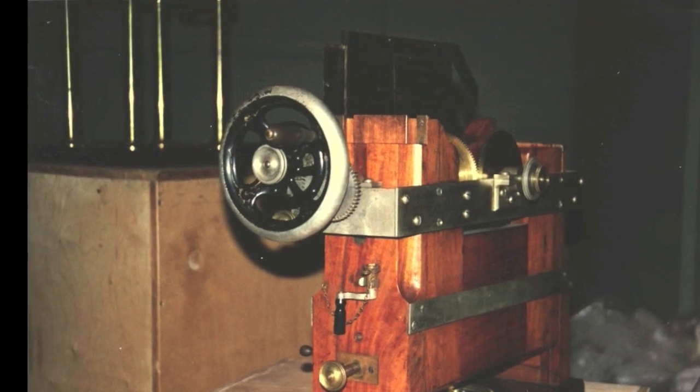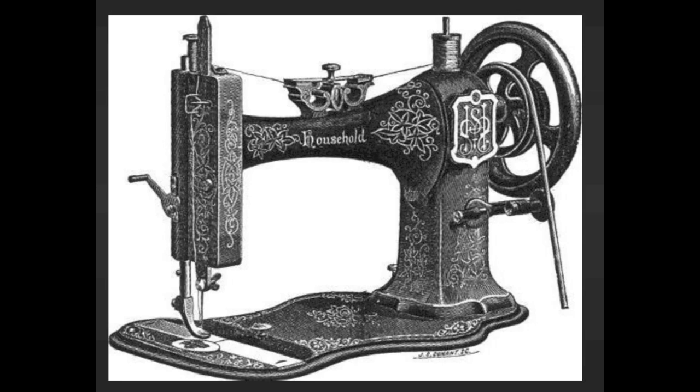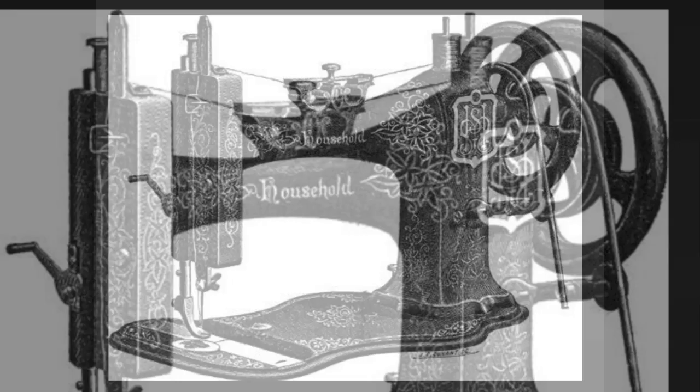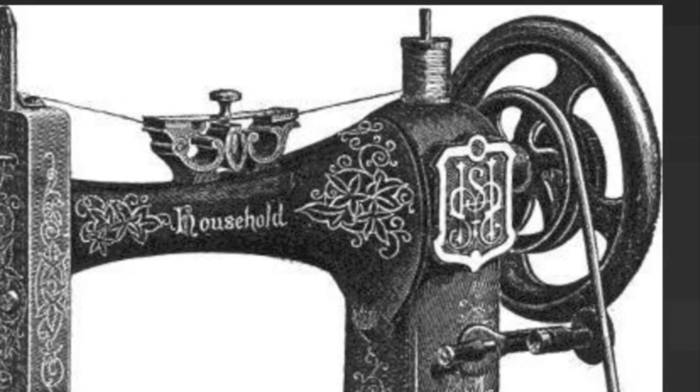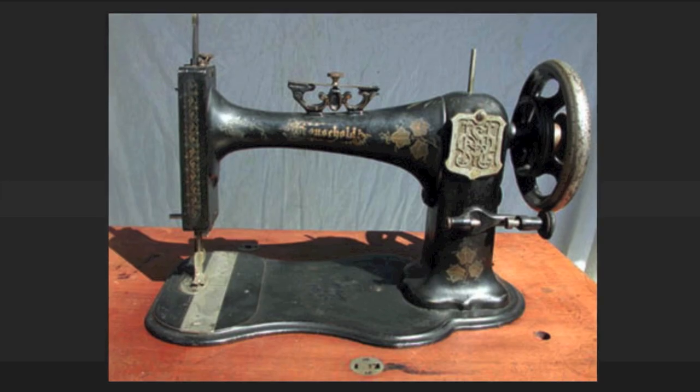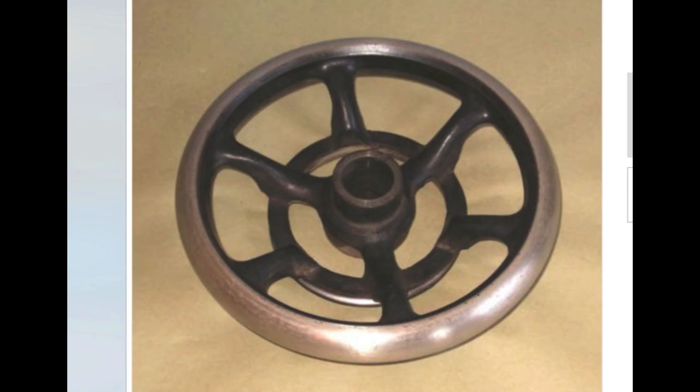This is the balance wheel and crank handle on the original Zoopraxiscope. With some research online I discovered it's probably the 1879 Singer, which is interesting because '79 was the year Muybridge probably built the Zoopraxiscope, which we can see matches. I couldn't find an exact one, but this is an 1890s Singer wheel that I did manage to acquire.